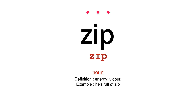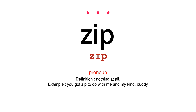Noun. Definition: Energy, Vigor. Example: He's full of zip. Pronoun. Definition: Nothing at all. Example: You got zip to do with me and my kind, buddy.